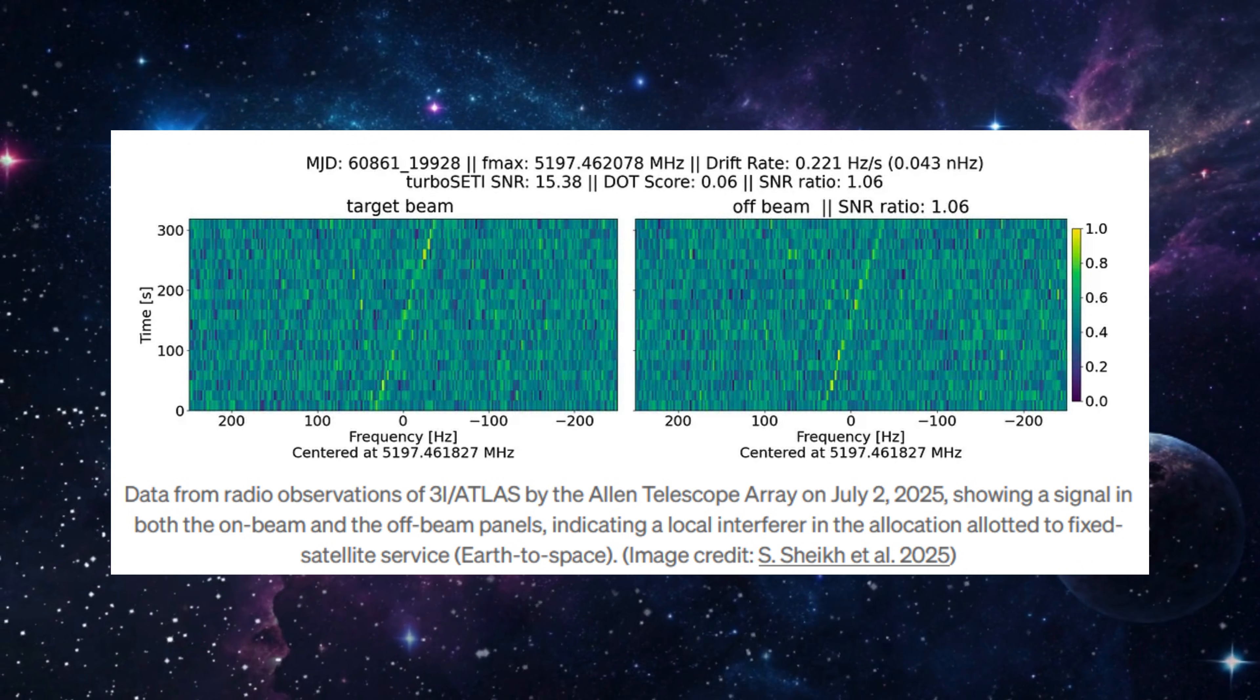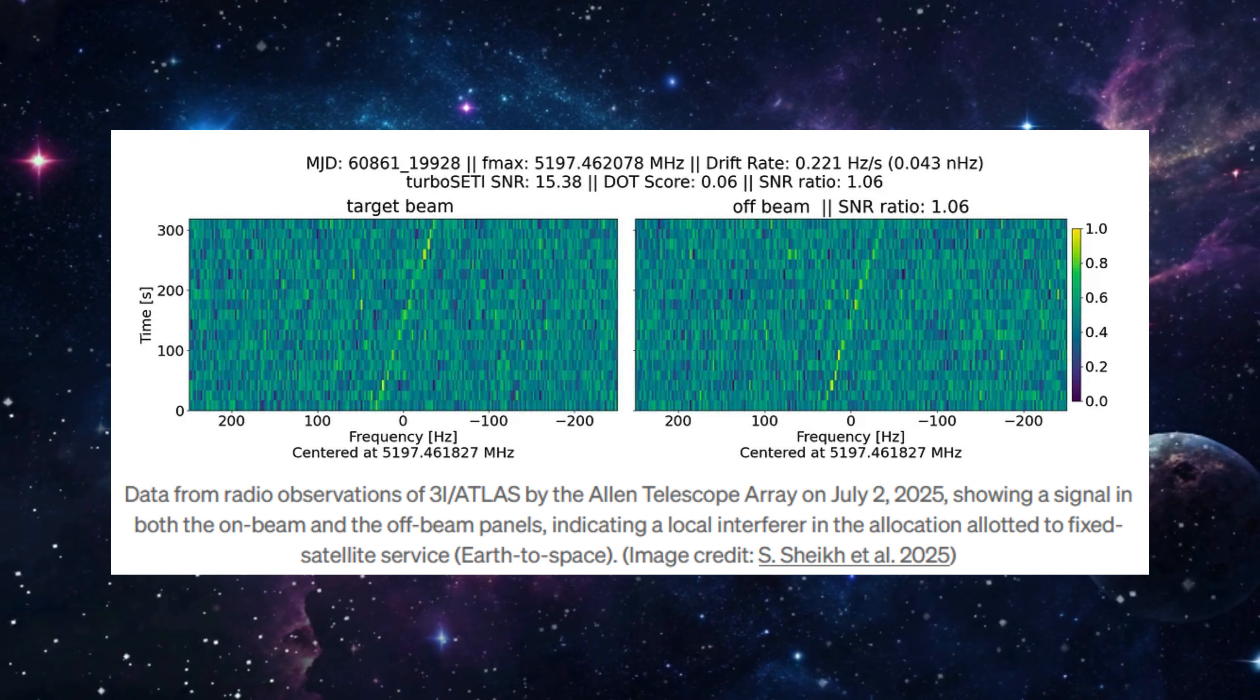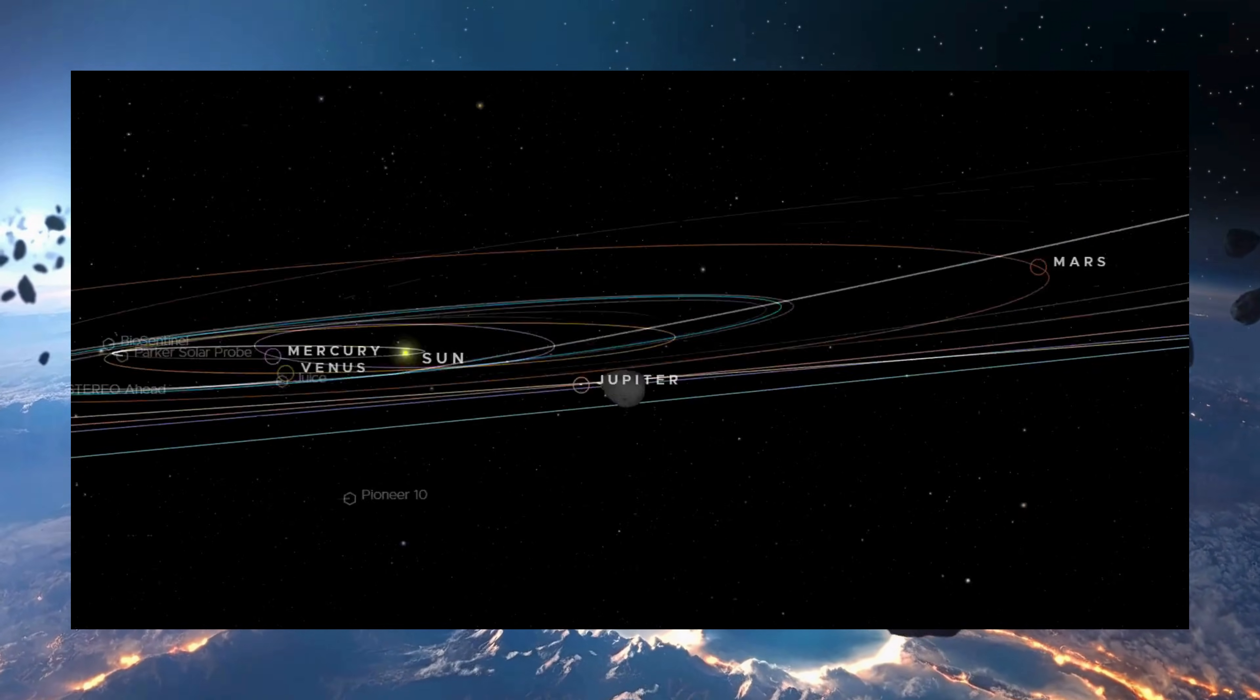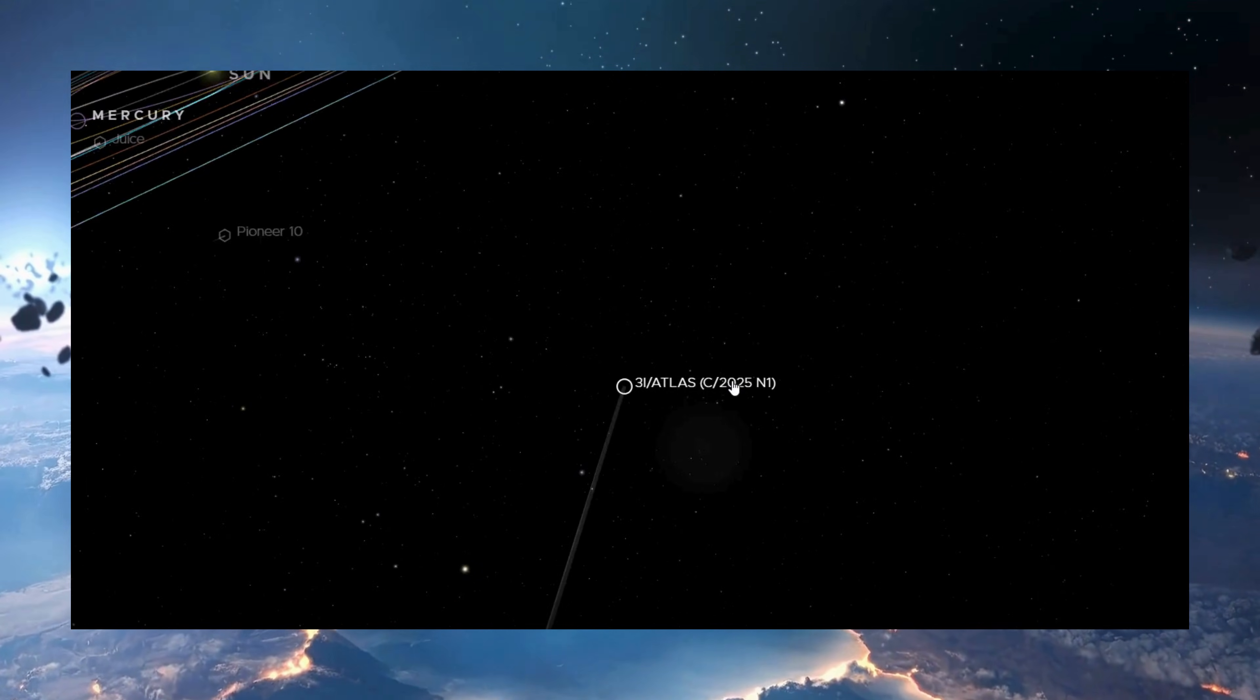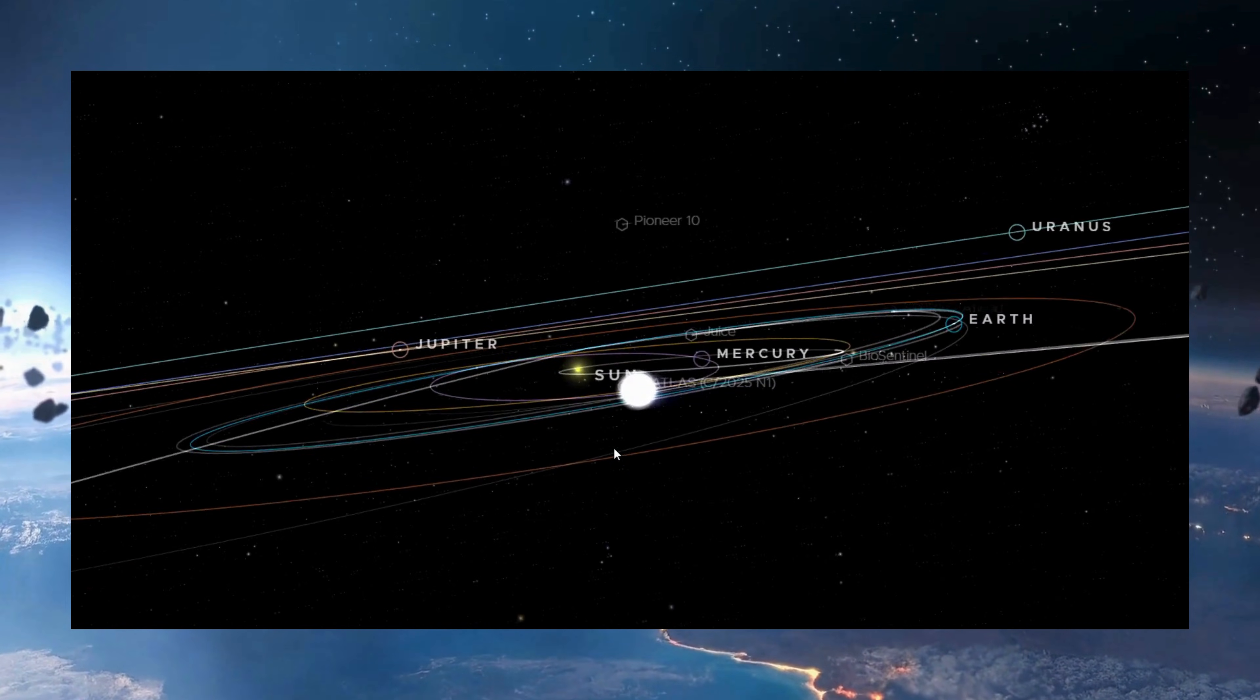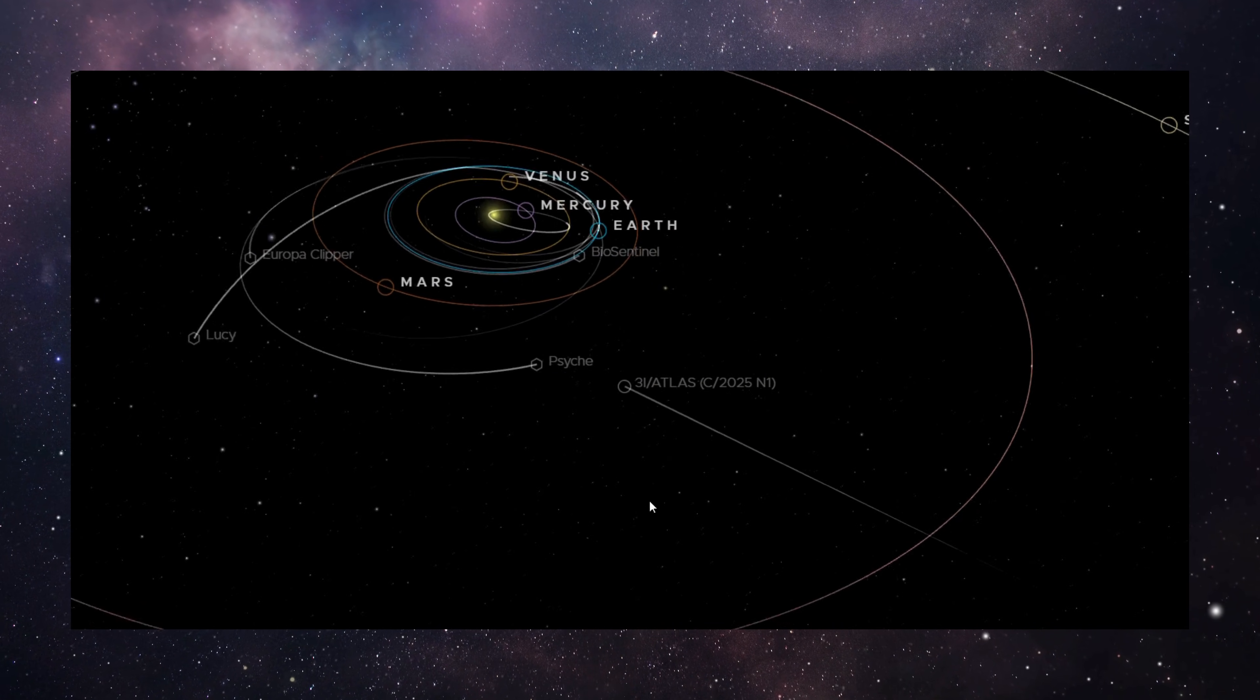The third explanation involves asymmetric outgassing combined with rotation. Comets don't release gas evenly. They have active regions—jets—that erupt from specific locations on the surface. The effect of those jets depends entirely on their orientation. From May through September, it's possible that the active regions were positioned in such a way that the thrust they produced was perpendicular to the comet's orbital path. That kind of acceleration would not show up clearly in standard position tracking. Then, as the object rotated and its thermal environment changed closer to the sun, those same jets may have reoriented. Suddenly, the thrust aligned with the trajectory, producing measurable acceleration in October. This behavior is not unusual. We see similar effects in many comets within our own solar system.